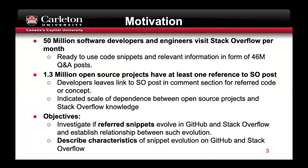Coming to the motivation for this work, Stack Overflow is a very popular knowledge source among software developers and engineers, resulting in large use dependency between Stack Overflow and GitHub. We wanted to investigate if snippets on these platforms evolve or not, what is the relationship between them, and how we can characterize such an evolution relationship. By snippet on GitHub, we mean a code chunk that has a link to a Stack Overflow post, and for Stack Overflow, it is a version of Stack Overflow posts that include text or code blocks.